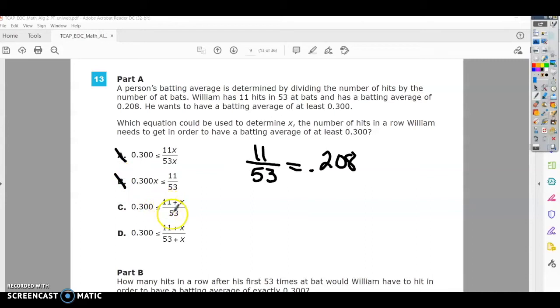This one is saying that he hit 11 times out of 53 at-bat and we're going to add another hit. We do want to add however many hits we need, but if we add the number of hits it's also going to add the total number of times at bat. So the only one that makes sense is D.